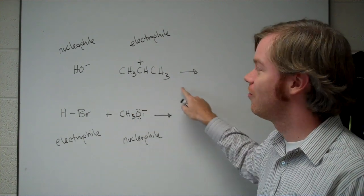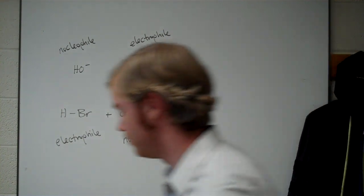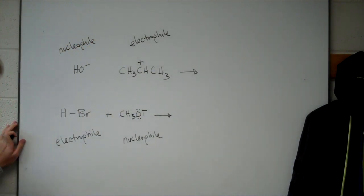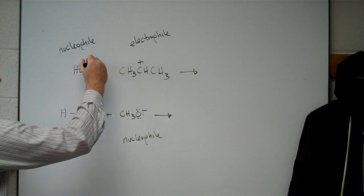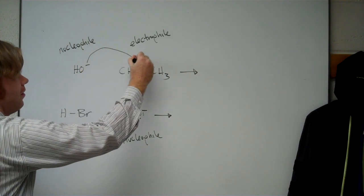And that way, to show the reaction, we use curved arrows. So to show the reaction, we use a curved arrow starting at the nucleophile, going to the electrophile.